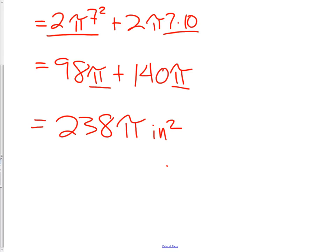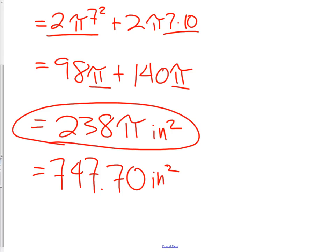However, if they wanted, or if we needed, a decimal version of this, we would simply take 238 times π and round it. So we would get 747.699 or 747.70 inches squared. Most of the time, that 238π answer is going to be the one we desire.